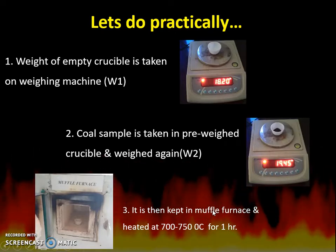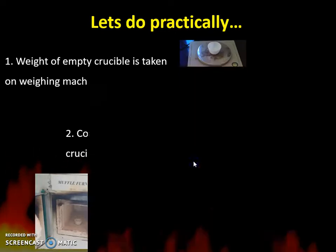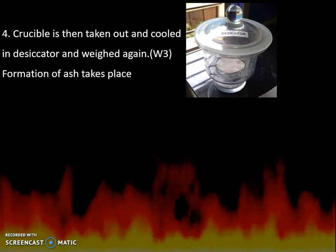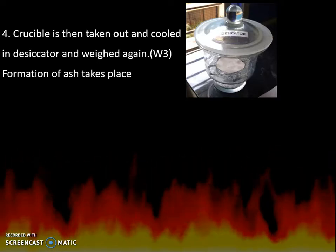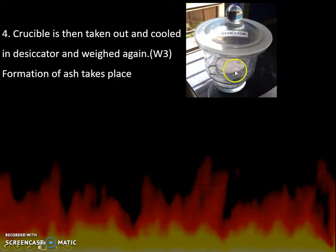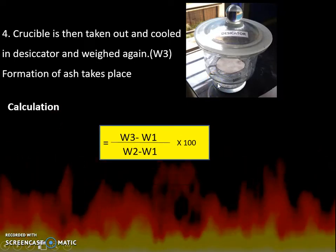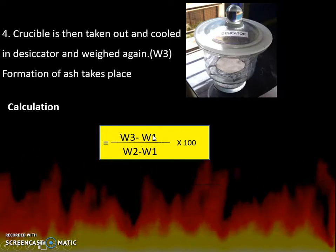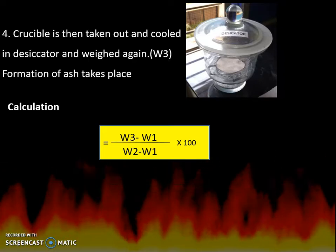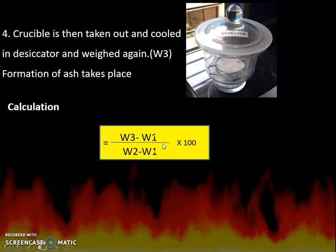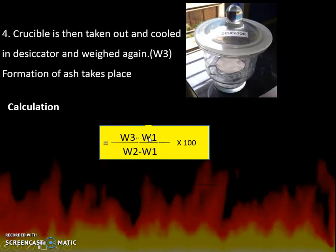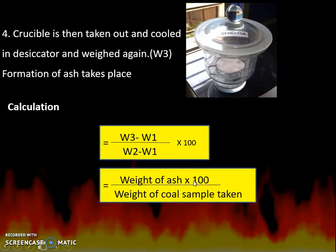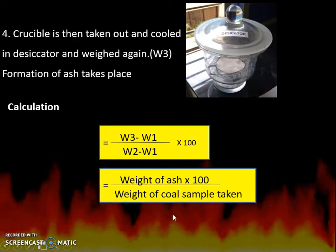At this temperature, the coal burns and is converted into ash. The crucible is then taken out from the muffle furnace, cooled in a desiccator at room temperature, and its weight is taken as W3 grams. The percentage ash is calculated as: (W3 minus W1) divided by (W2 minus W1), multiplied by 100. Here W3 minus W1 is the weight of ash, and W2 minus W1 is the weight of coal sample taken.